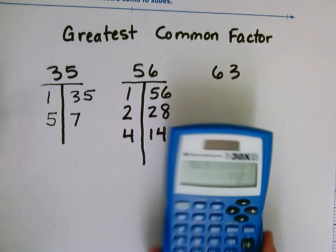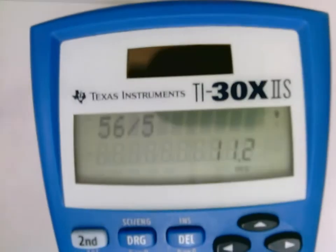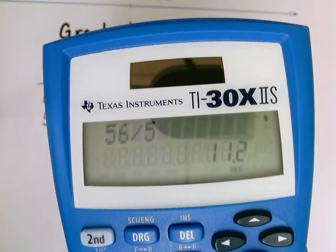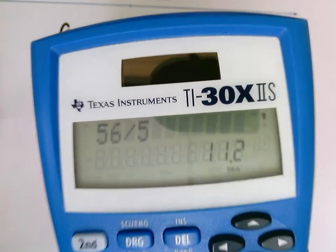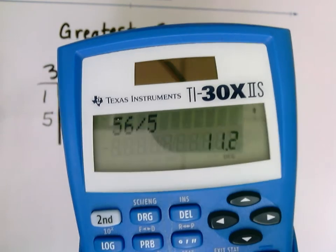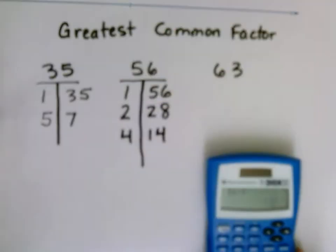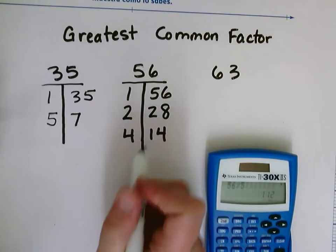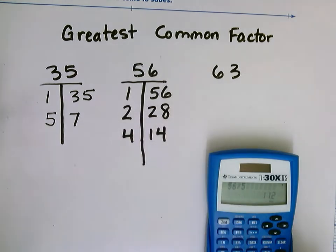And you can see that there is a number past my decimal point in my answer, 11 and 2 tenths, 11.2. That is not a factor because it is not a whole number without a decimal point. So 5 is not a factor.